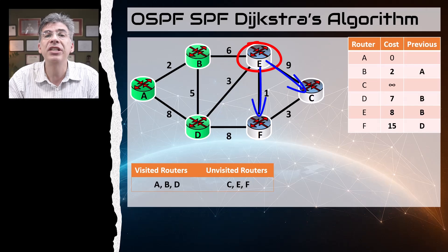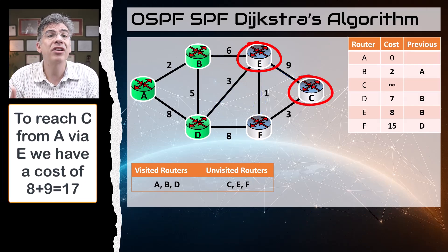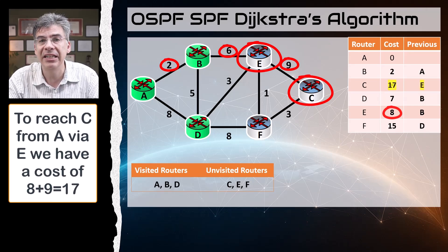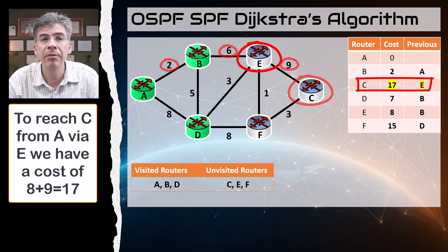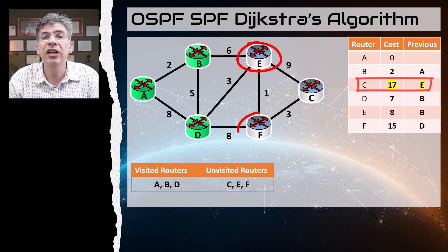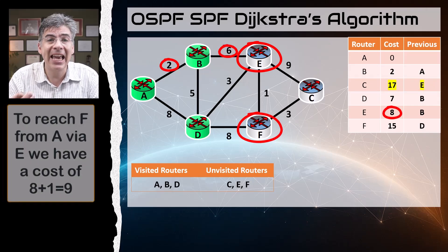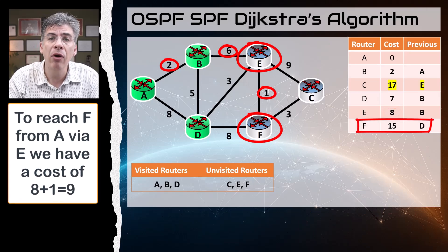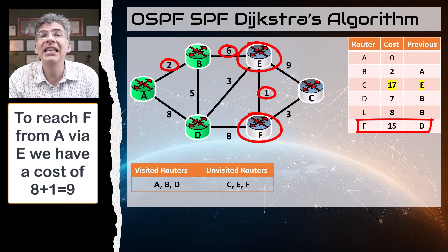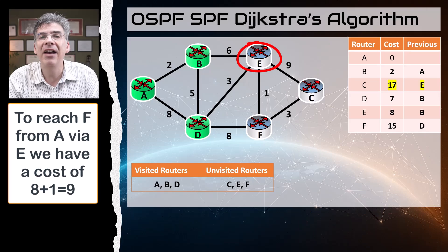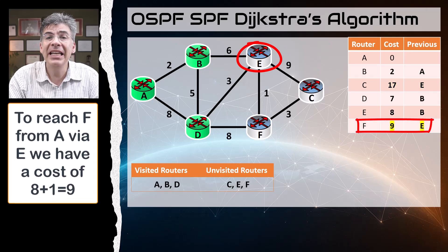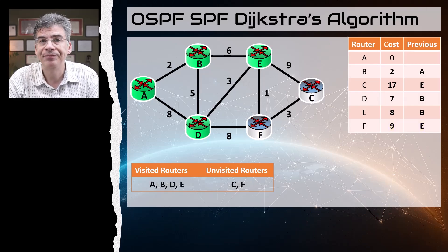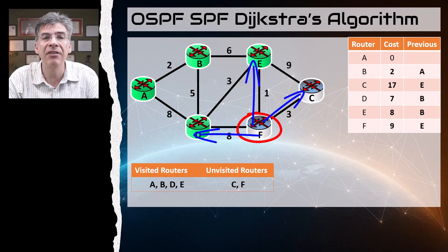Next we look at router E. From A via E we can reach C with a cost of eight plus nine, which is seventeen. So C gets a value of seventeen via E, and we put E in the previous node column. Next, the cost to reach F via E is eight plus one, totaling nine. In the table, F currently has a cost of fifteen via D, but nine is a smaller cost, so we replace fifteen with nine and put E in the previous node column. Router E is now marked as visited.